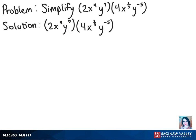To simplify this problem, we're going to have to start by multiplying everything. So, 2 times 4 is 8.